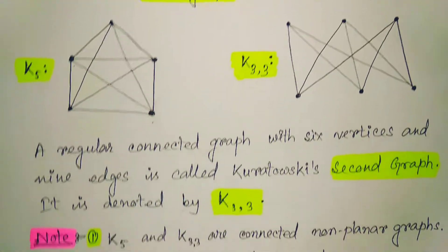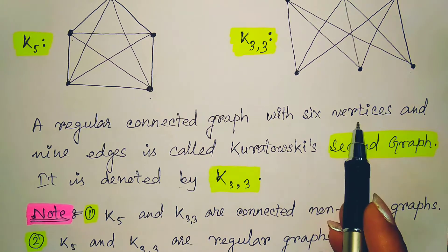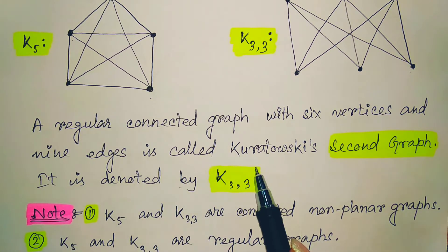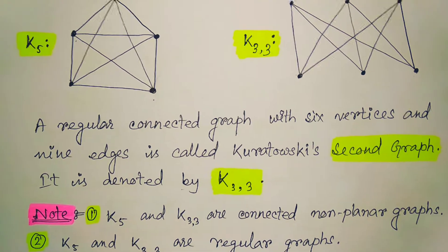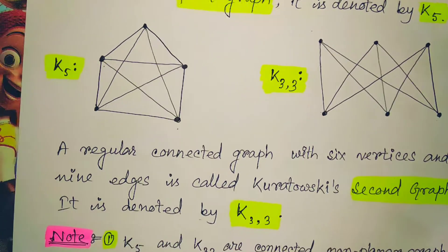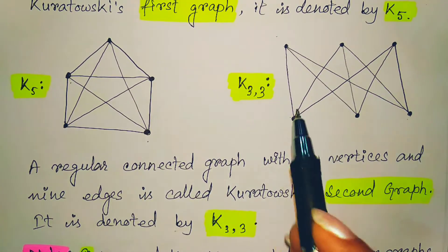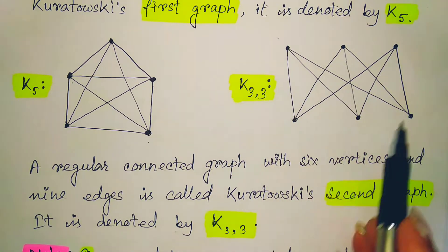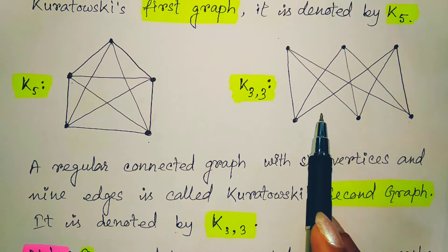Kuratowski's second graph is a regular graph with 6 vertices and 9 edges, and it is denoted by K3,3. K3,3 means it is a complete bipartite graph with 3 and 3 vertices — total 6 vertices with 3 vertices on each side. This is the picture of the K3,3 graph, which is Kuratowski's second graph.